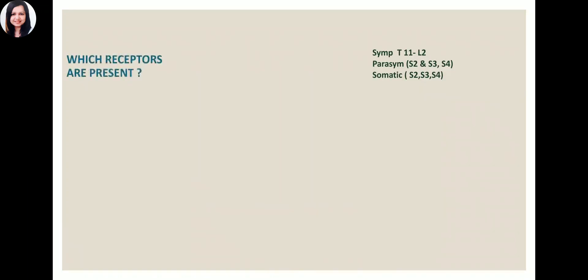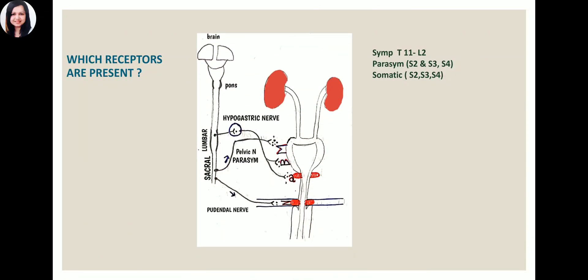The receptors present in the urinary bladder are: muscarinic M3 receptors on the detrusor muscle, beta-3 receptors also on the detrusor, alpha receptors at the internal urethral sphincter, and nicotinic receptors at the external urethral sphincter.